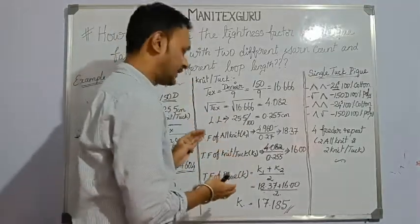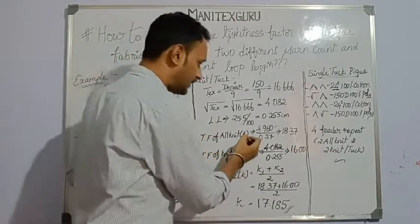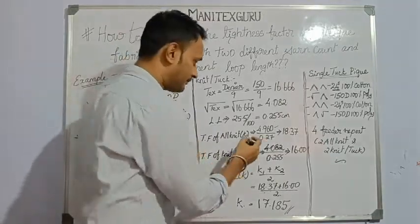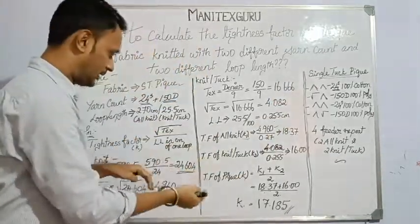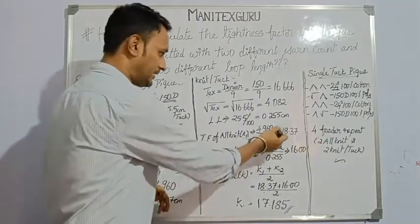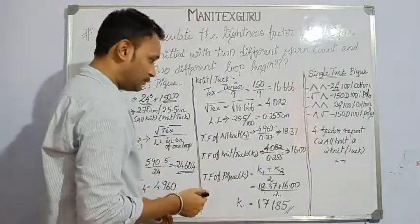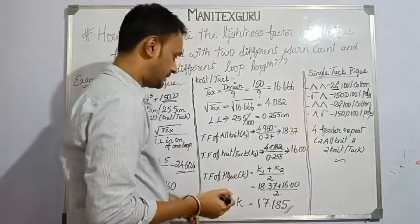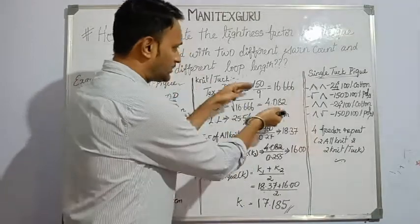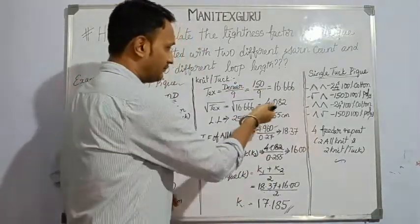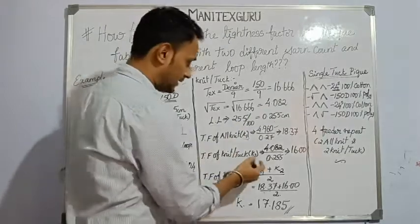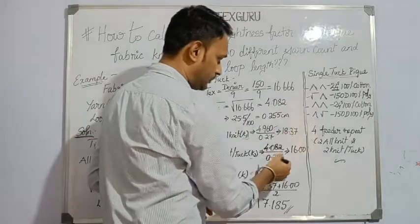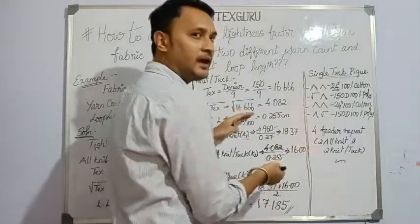Let's calculate the tightness factors. For all-knit, K1 = √tex ÷ loop length = 4.960 ÷ 0.27 = 18.37. For knit-tuck, K2 = 4.082 ÷ 0.255 = 16.0. We now have both tightness factors for the two structures within the fabric.